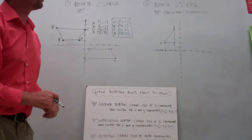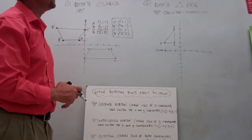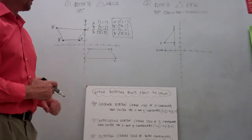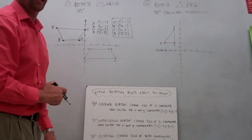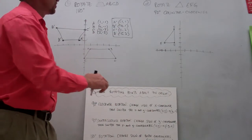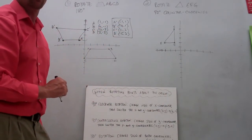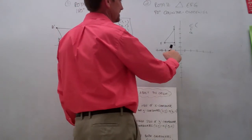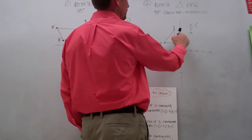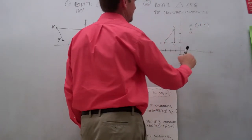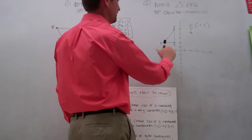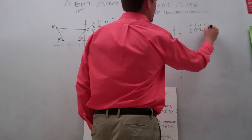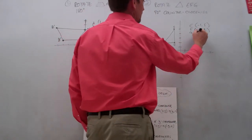Same thing over here on this triangle — it asks us to rotate triangle EFG 90 degrees counterclockwise. For a counterclockwise rotation, our rule says to change the sign of the y-coordinate and then switch the x and y-coordinates. So first, let's write down the coordinates. Point E has coordinates negative 1, 5. Point F has coordinates negative 3, 2. And point G has coordinates negative 1, 2.